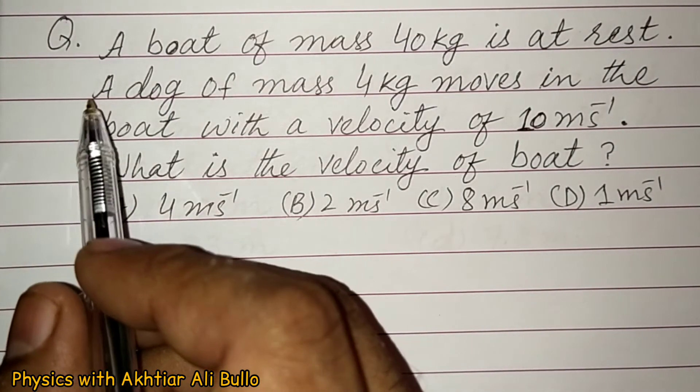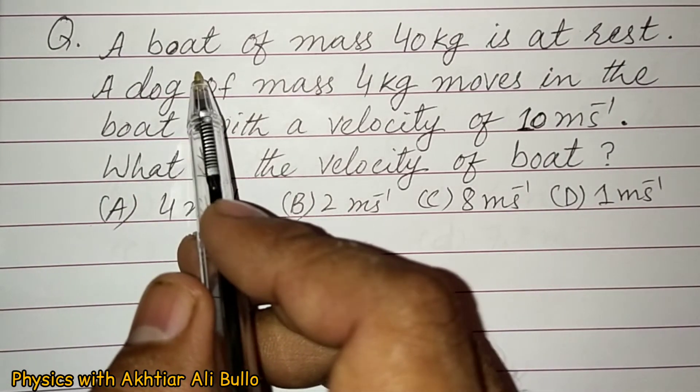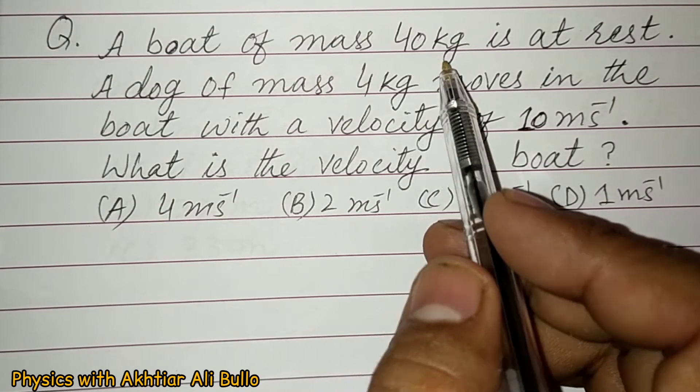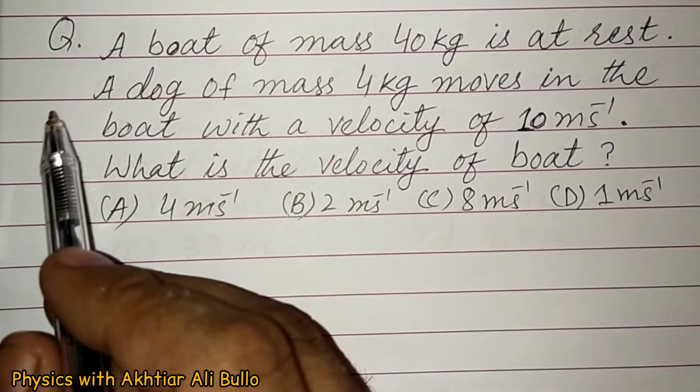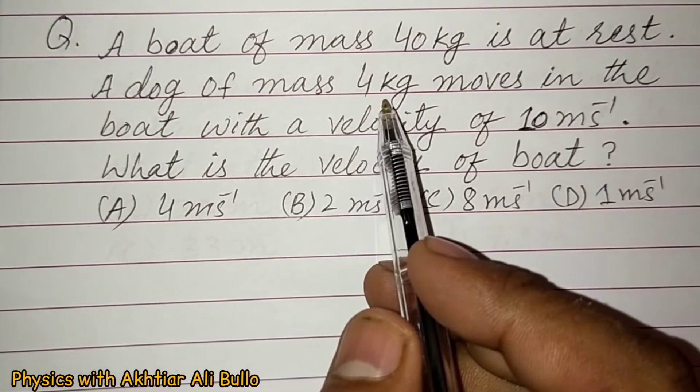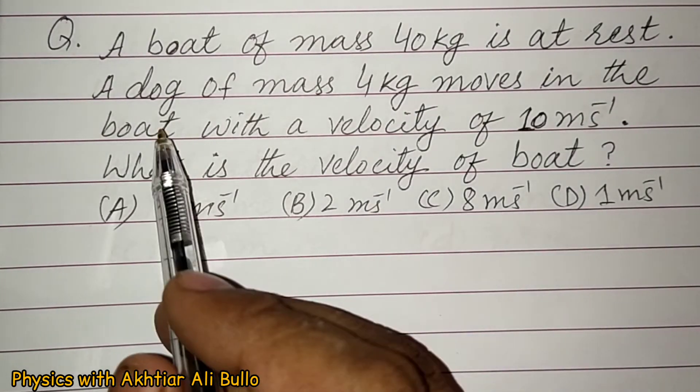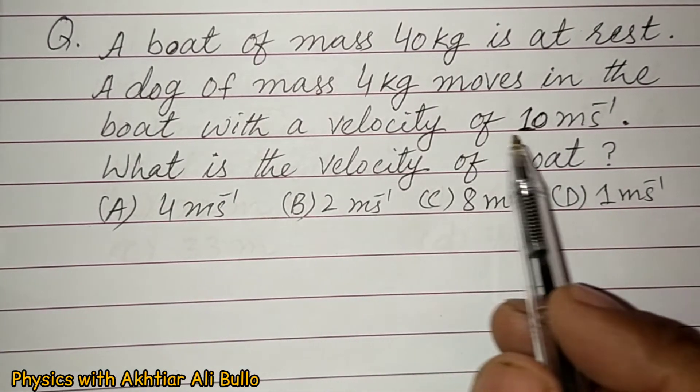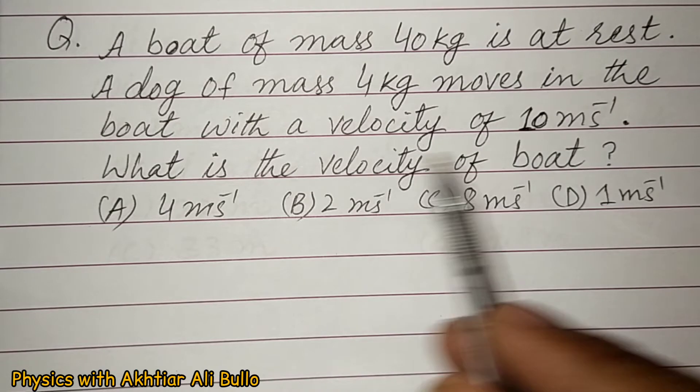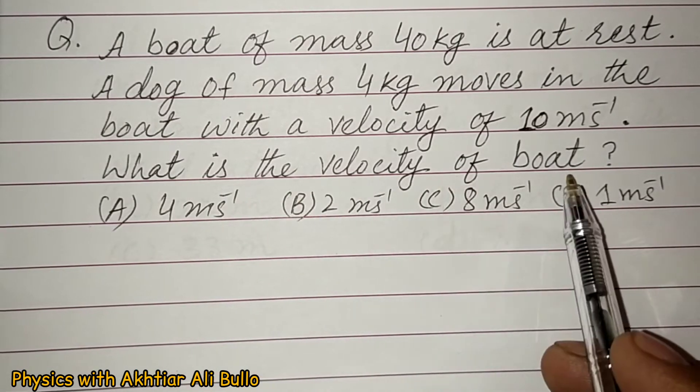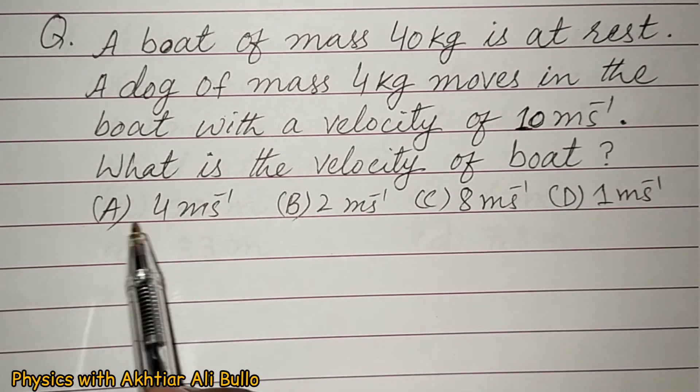The question is: A boat of mass 40 kg is at rest. A dog of mass 4 kg moves in the boat with a velocity of 10 meter per second. What is the velocity of boat? (A) 4 meter per second, (B) 2 meter per second, (C) 8 meter per second, (D) 1 meter per second.